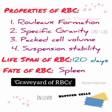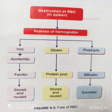Red blood cells are destroyed in the spleen, and once fragmented, hemoglobin is phagocytosed by macrophages in the liver, spleen, and bone marrow.